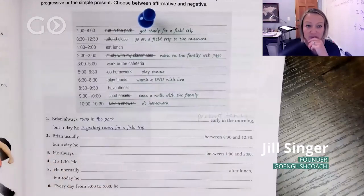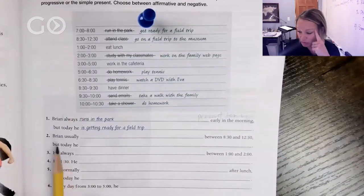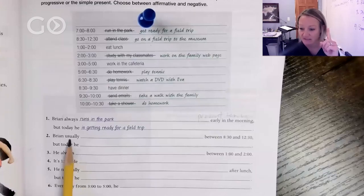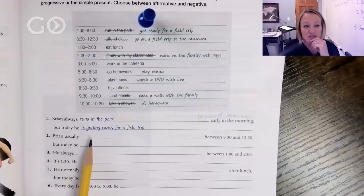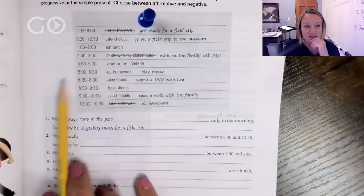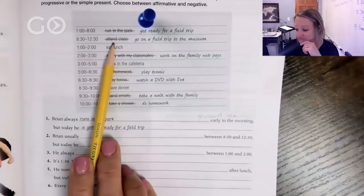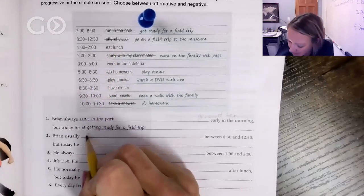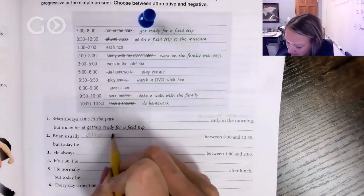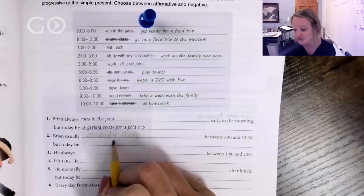Okay, let's do this together. Brian is usually blank. When I see the word 'usually' I know present tense. Brian usually blank between 8:30 and 12:30, so what is he doing at 8:30 to 12:30? He usually attends class. Don't forget that S in third person because we're talking about Brian.